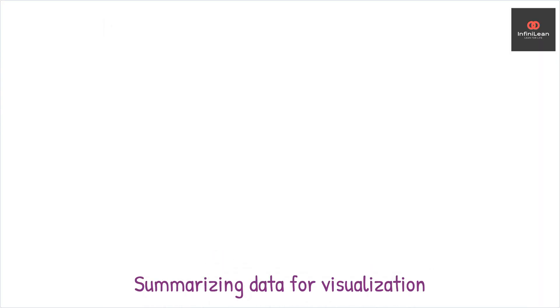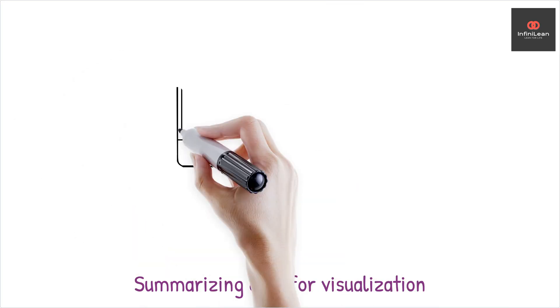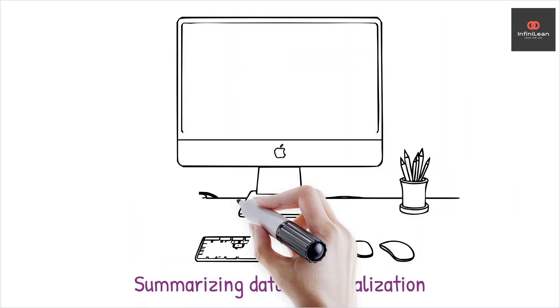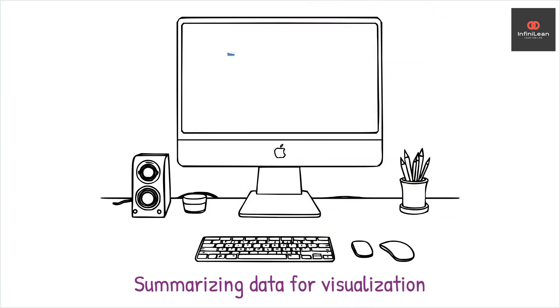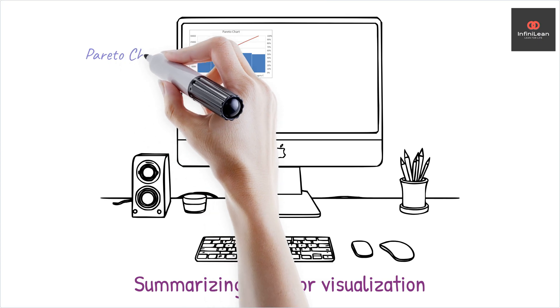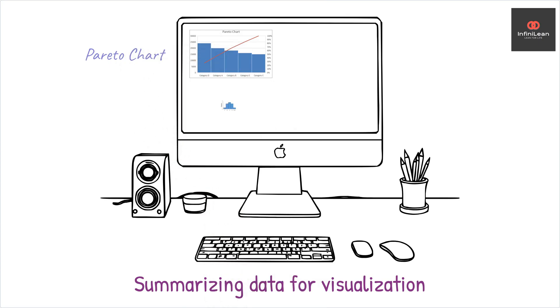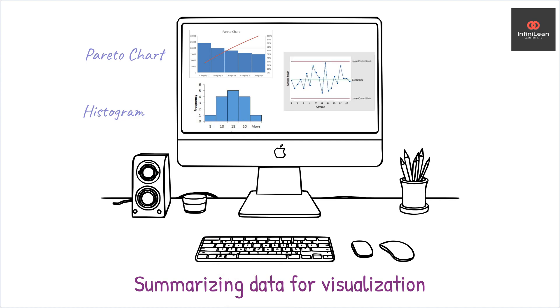After validating the measurement system, summarize the data to visualize the current state of the process. Tools like Pareto charts, histograms, and control charts can reveal patterns, trends, or areas of concern within the collected data. These visual representations allow us to communicate findings effectively and build a solid foundation for the Analyze Phase, where you'll look for root causes of process inefficiencies.